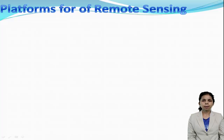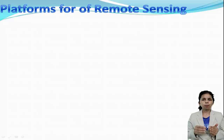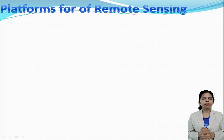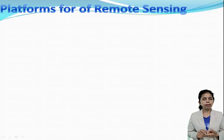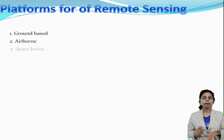Now let us study about platforms for remote sensing. Platforms are nothing but the base over which remote sensors are placed to acquire information about the earth's surface — these are known as platforms for remote sensing. There are mainly three platforms: number one, ground-based platform remote sensing; number two, airborne platform remote sensing; number three, space-borne platform remote sensing.